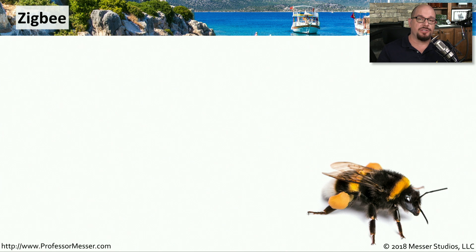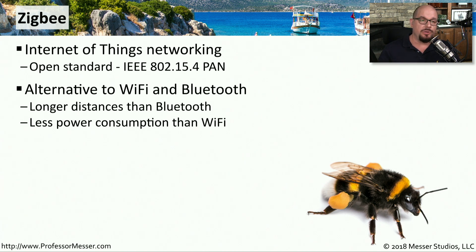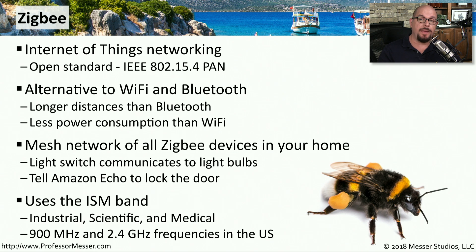There are two major wireless standards associated with Internet of Things technologies. One open standard is Zigbee, defined as the IEEE 802.15.4 Personal Area Network. Instead of using Wi-Fi or Bluetooth, you can use a Zigbee connected device — it uses less energy than Wi-Fi and can go longer distances than Bluetooth. Unlike 802.11 which requires a central access point, Zigbee is a meshed network, meaning all Zigbee devices can communicate through each other to expand the network size. Zigbee communicates over the ISM band — the industrial, scientific, and medical band — using 900 megahertz and 2.4 gigahertz frequencies in the United States.